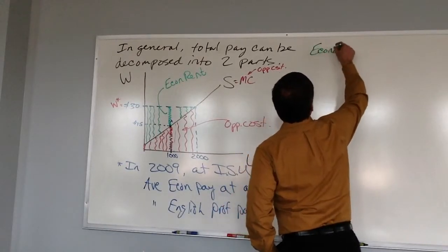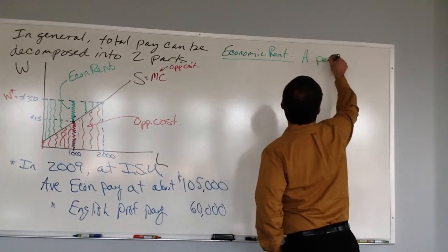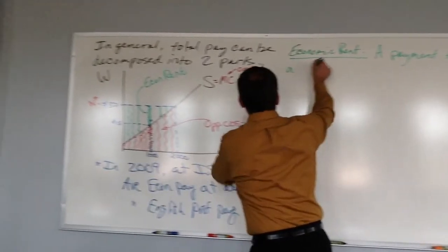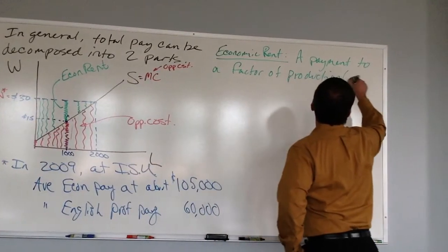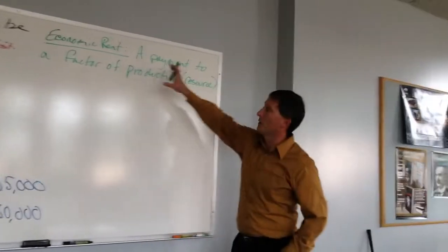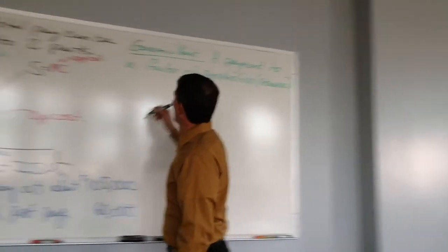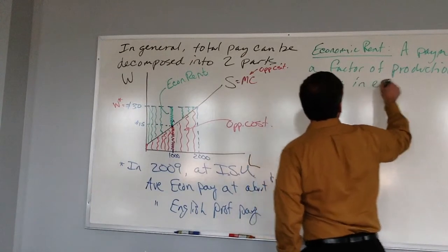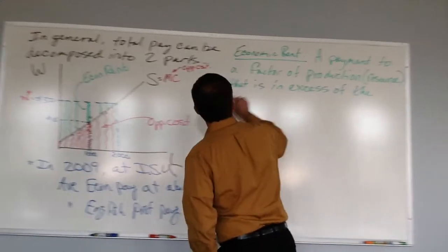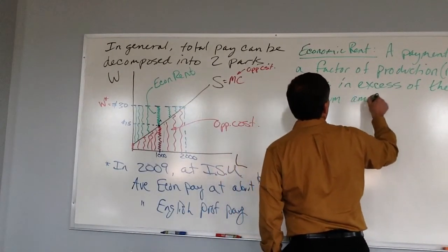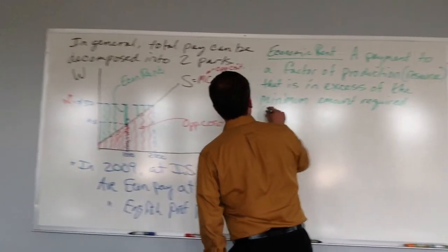Economic rent is a payment to a factor of production — a resource — that is in excess of the minimum amount required, which is the opportunity cost. So economic rent is the surplus above and beyond what's needed to keep that resource in its current use.